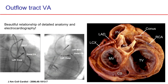From the anatomic specimen you can see there are a lot of other things in the neighborhood—a rich supply of both arteries and veins to be avoided or taken advantage of. The relationships of the outflow tract really make sense with the electrocardiography of the outflow tract. There are many different vantage points to get catheters to the outflow tract sites.